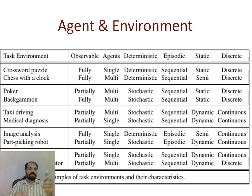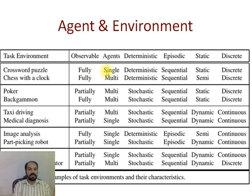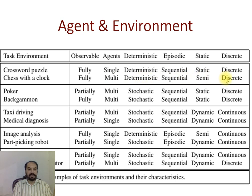Finally, here is a summary table of task environments and their environment states. Crossword puzzle: fully observable, single agent, deterministic, sequential, static, discrete. Chess with a clock: fully observable, multi-agent, deterministic, sequential, semi-dynamic, discrete. Poker: partially observable, multi-agent, stochastic, sequential, static, discrete. Thank you very much.